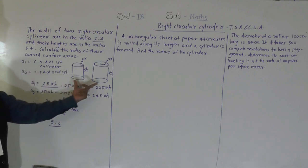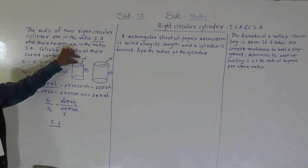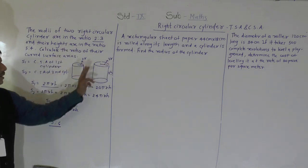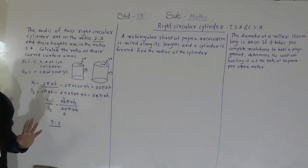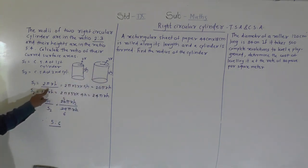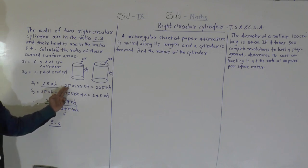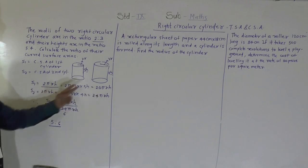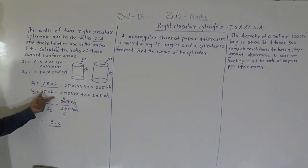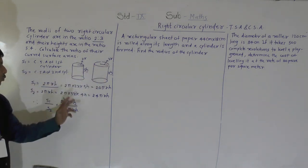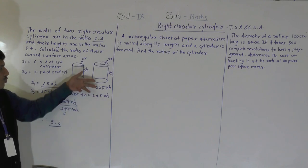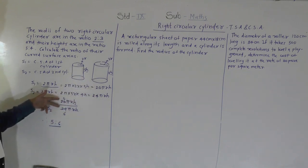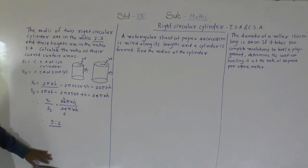To recap: we had two cylinders with radii in ratio 2:3 and heights in ratio 5:4, so we took 2r, 3r and 5h, 4h. Using CSA = 2πrh, we got S1 = 2π × 2r × 5h = 20πrh and S2 = 2π × 3r × 4h = 24πrh. The ratio S1:S2 = 20:24 = 5:6.